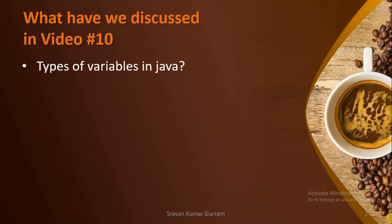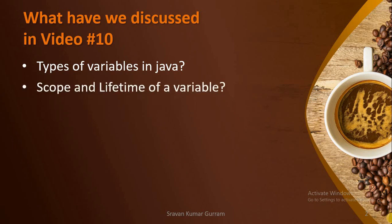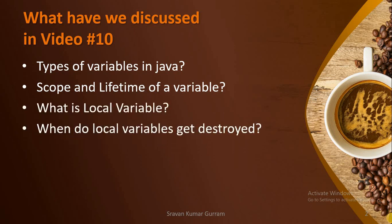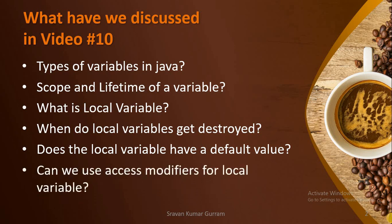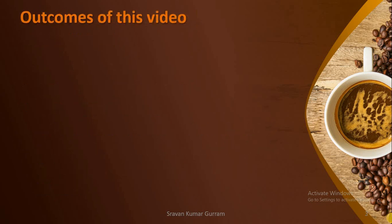Before starting today's session, let us try to recall what we discussed in our last video: types of variables in Java, scope and lifetime of a variable, what is a local variable, when do local variables get destroyed, does the local variable have a default value, and can we use access modifiers for a local variable? After watching this video, you can give the answers to these questions.